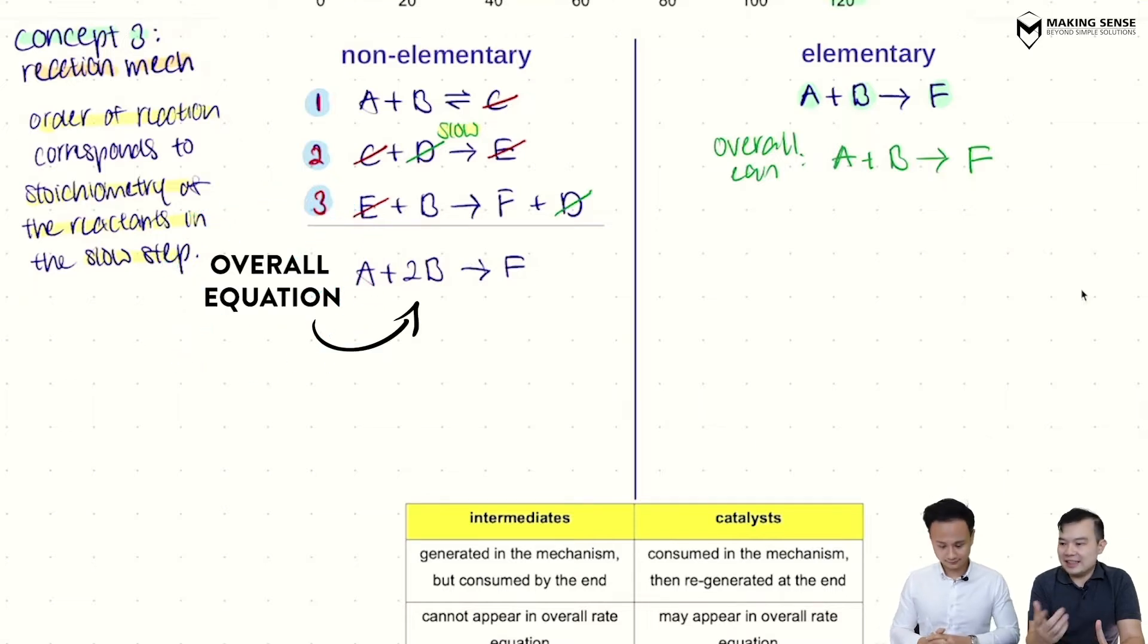So if I combine everything now, you would see my overall equation, this becomes A plus 2B becomes F. Okay, great. So that is the method which I think is quite simple. Now the next of which is the things that you have cancelled, Mr. Tim. They are either called a catalyst or an intermediate.